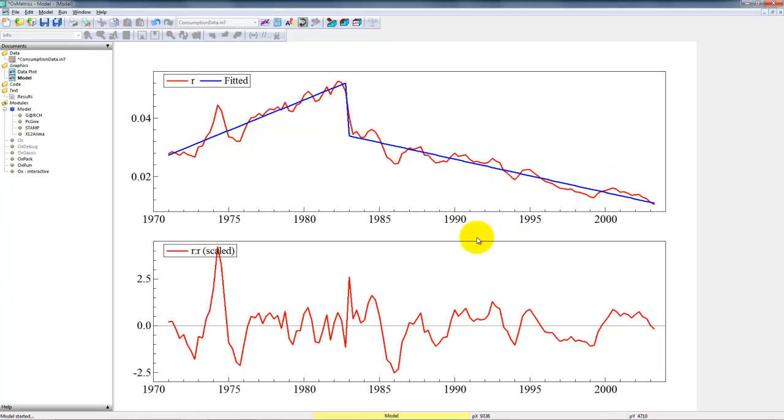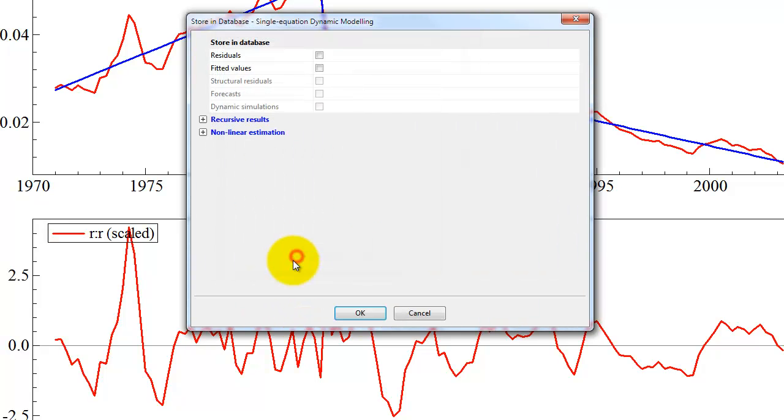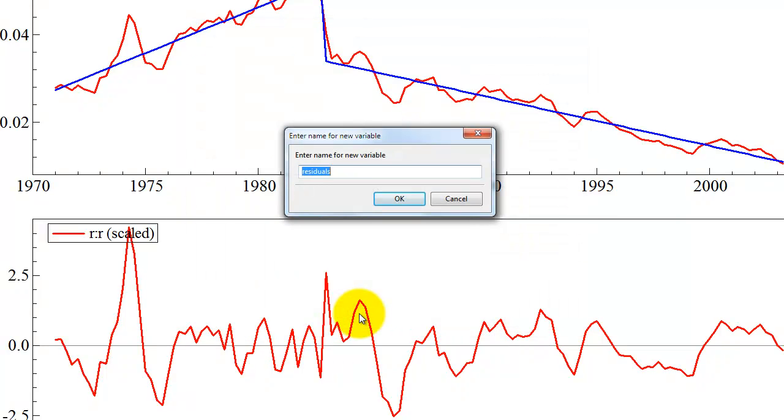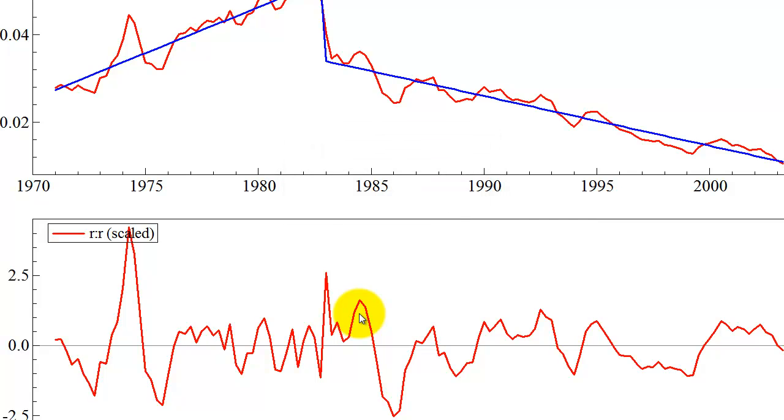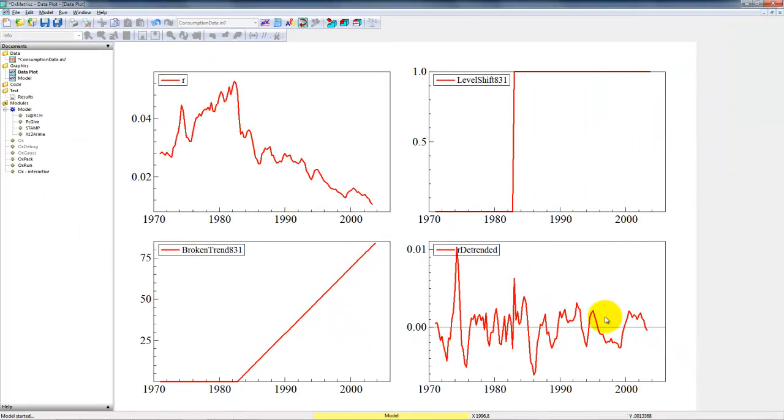To save those series, you go to the test menu. You click store residuals in database. And you select the residuals. And we could call this new variable R detrended. Like this. And we could now do a plot of the detrended variable. And it would give us exactly this graph. So this is now the detrended variable.